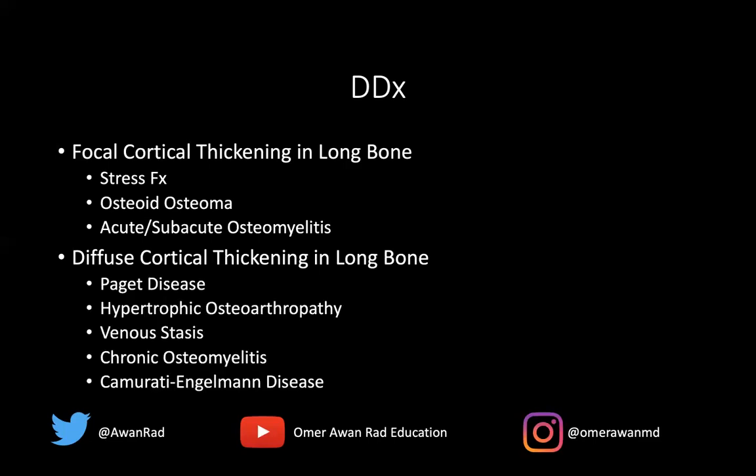The differential for diffuse cortical thickening is quite different. We think about Paget's disease with cortical thickening and coarsening of the trabeculae. Hypertrophic osteoarthropathy and venous stasis result in diffuse symmetric periostitis, which can simulate diffuse cortical thickening. Chronic osteomyelitis — not acute — can result in diffuse cortical thickening; in the acute phase you expect focal thickening, but in the chronic phase it becomes diffuse. And of course, Camurati-Engelmann disease, as we saw in this case.